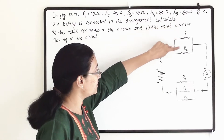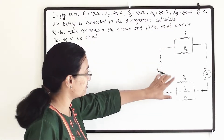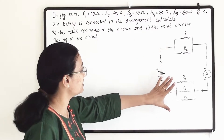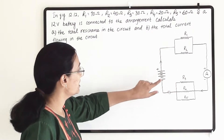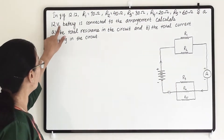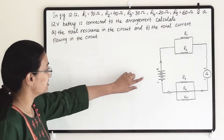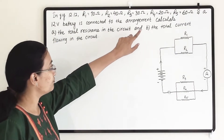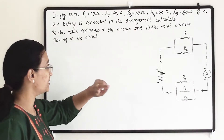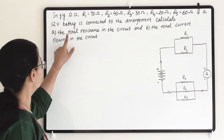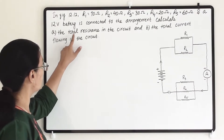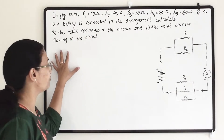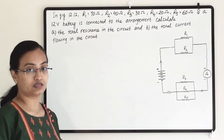Here R1, R2, R3, R4, and R5 — five resistors — are there in the circuit, along with a 12 volt battery connected to the arrangement. We have to calculate two things: first, the total resistance in the circuit, and second, the total current flowing in the circuit.